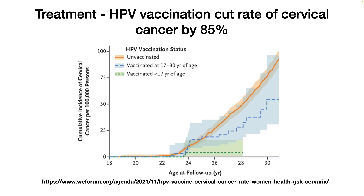Finally, treatment of HPV. HPV has a vaccine, and the CDC began recommending the HPV vaccine for young women in 2006. It has since been expanded to young men. Why young — around the age of 12? Because that is before young adults become sexually active, so they can be immunized against this disease before that time.